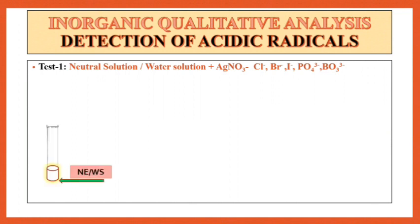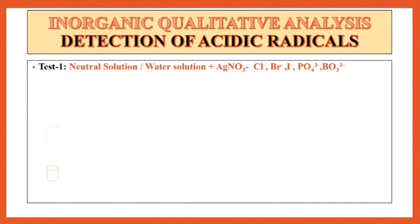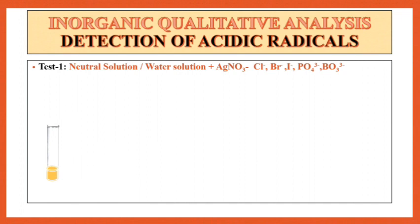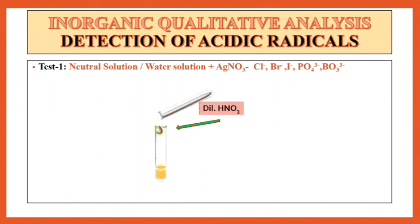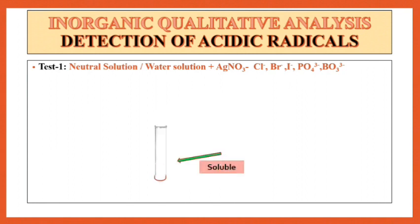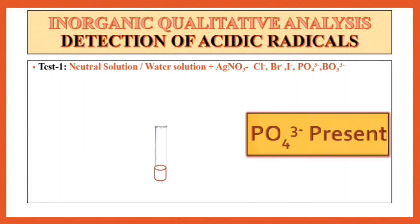Next test for the addition of HNO3 solution: a yellow PPT is observed. Then to this yellow PPT, add dilute HNO3 drop wise. After the addition of dilute HNO3, shake it well. It is soluble in dilute HNO3. So PO4³⁻ is present.